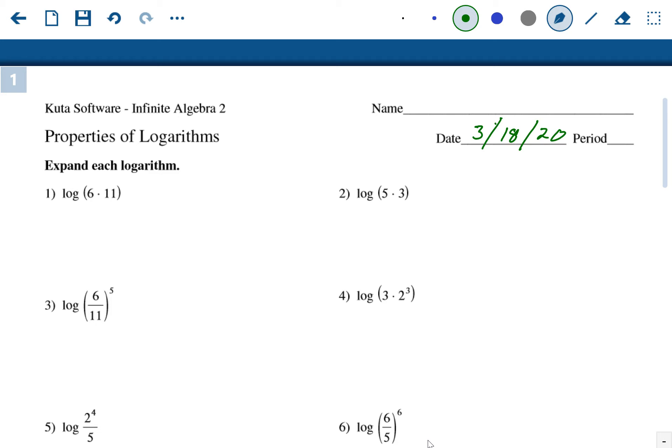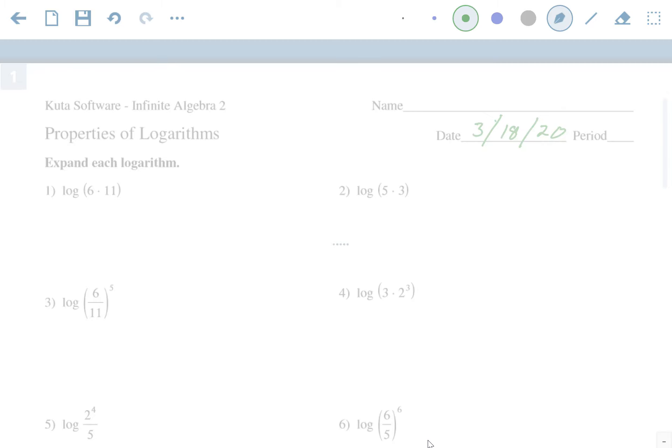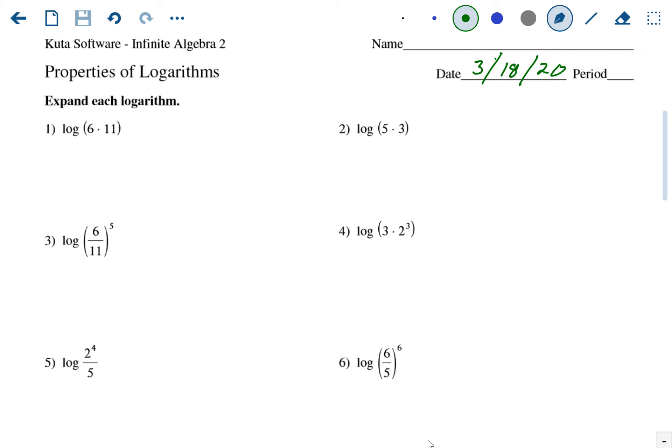The front of this page is just expanding logarithms. Remember there's three rules: if it's a multiplication problem, you're gonna separate them through addition. Each separate number or variable gets its own logarithm. If you have two numbers, you're gonna have two logs. The second rule is if you have division, we're gonna separate that with subtraction. And if you have an exponent, that exponent is going to go out front as a multiplication.